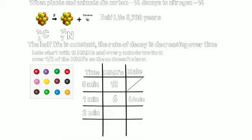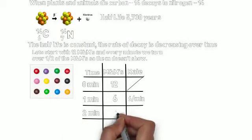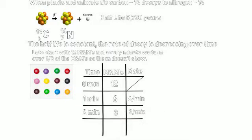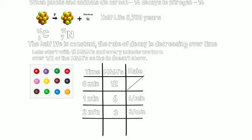After 2 minutes, we're going to have 3 M&Ms remaining. So in that minute, going from 1 minute to 2 minutes, we turned over 3 per minute. The rate decreased.